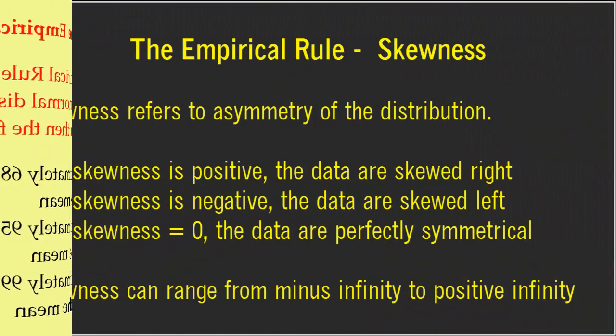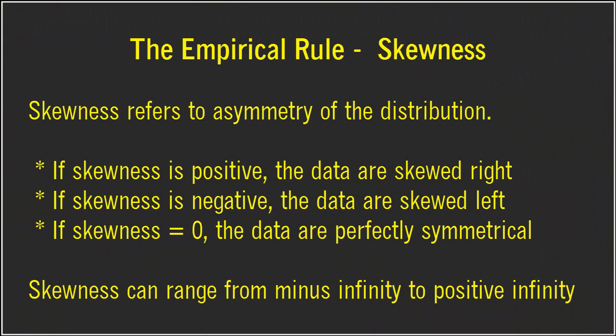Next, test of normality: Skewness. Skewness refers to asymmetry of the distribution. If skewness is positive, the data are positively skewed or skewed right, meaning that the right tail of the distribution is longer than the left. If skewness is negative, the data are negatively skewed or skewed left, meaning that the left tail is longer. If skewness equals 0, the data are perfectly symmetrical. Skewness can range from minus infinity to positive infinity.